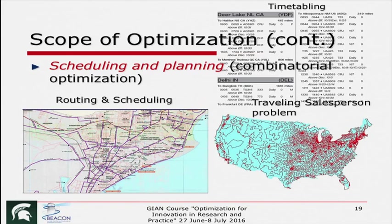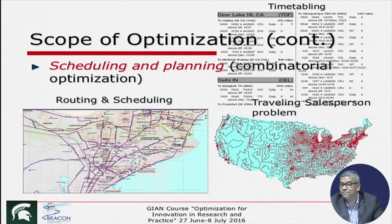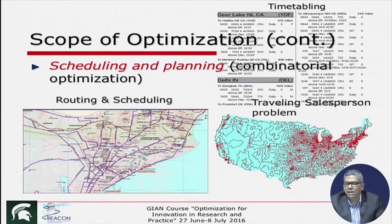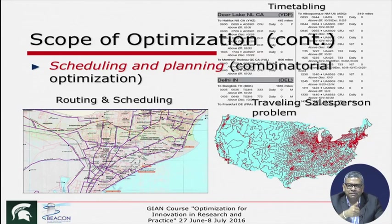The fourth class of problems is scheduling, routing, and planning. Classroom scheduling, for example: in this campus there are many classes, few classrooms, few teachers, and few days in a week. Constraints include that no student sits in two different classes at the same time, and two courses cannot be taught in the same room simultaneously. We tried to formulate this for IIT Kanpur — there are so many constraints that it is very difficult to find even one feasible solution from scratch. These problems are much more difficult than design problems.